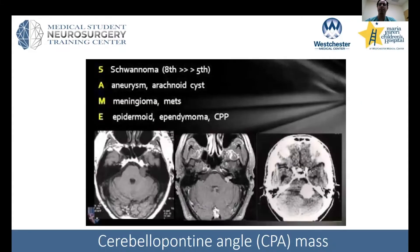I'd like to show a few examples of different pathologies based on location. One location is the cerebellopontine angle. We have your cerebellum, the pons — it's kind of the angle that it makes. There are a lot of different pathologies here.